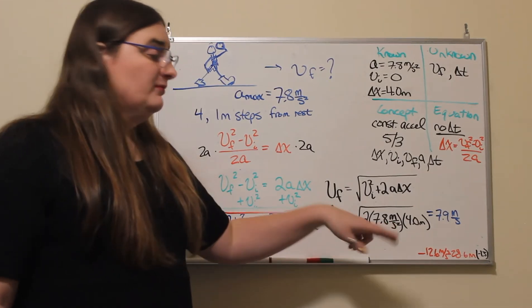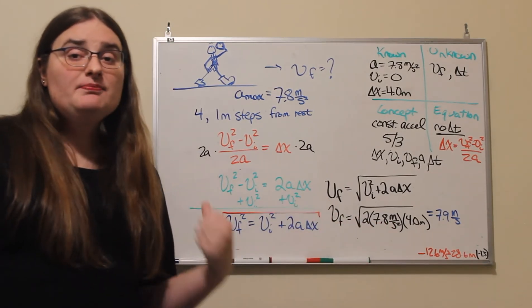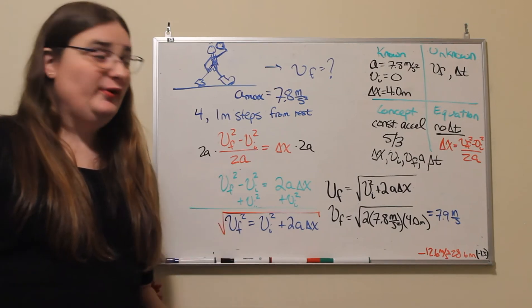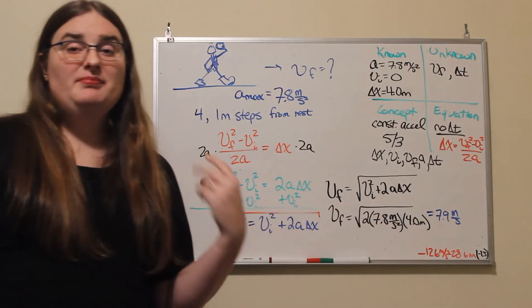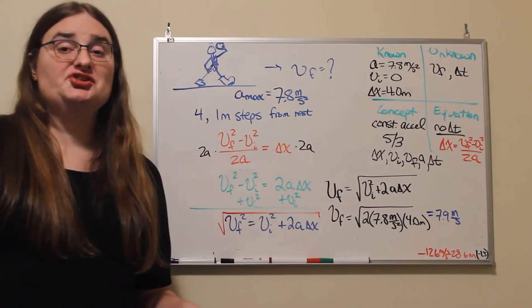Now, I have a 2. My acceleration, I said, is 7.8 meters per second squared times my displacement of 4 meters.